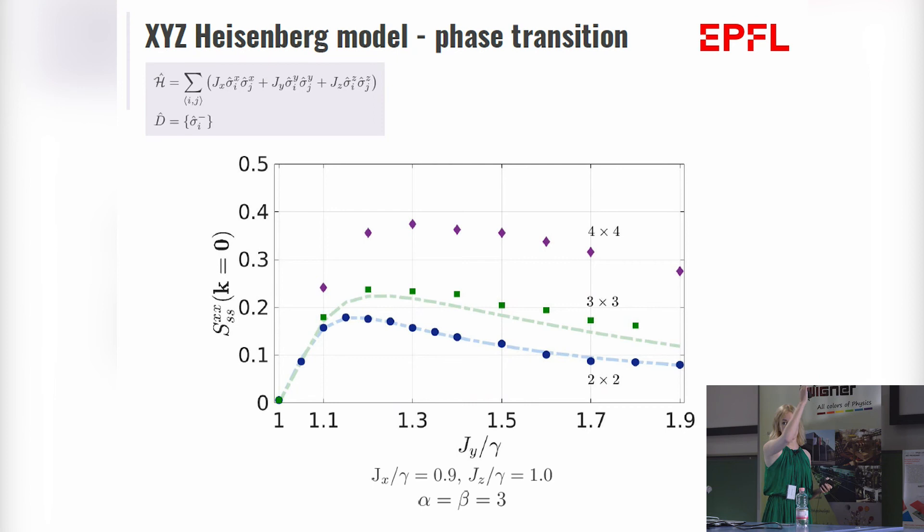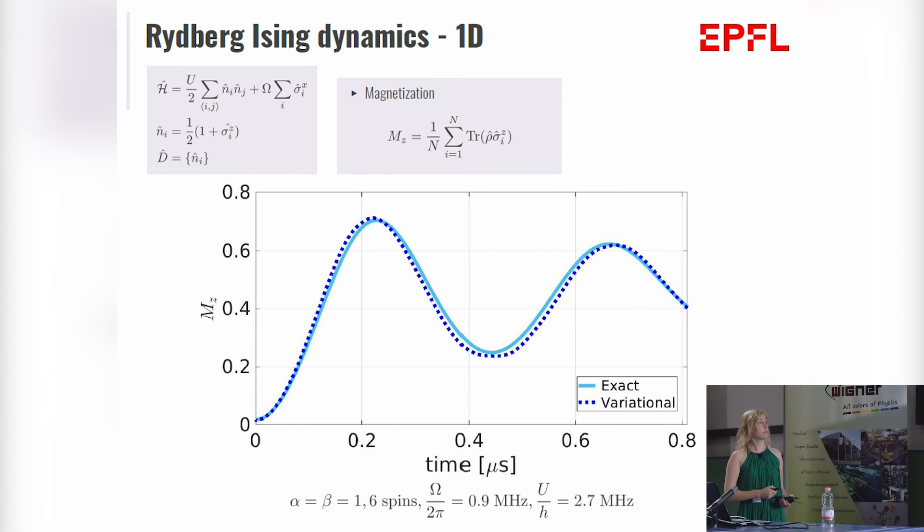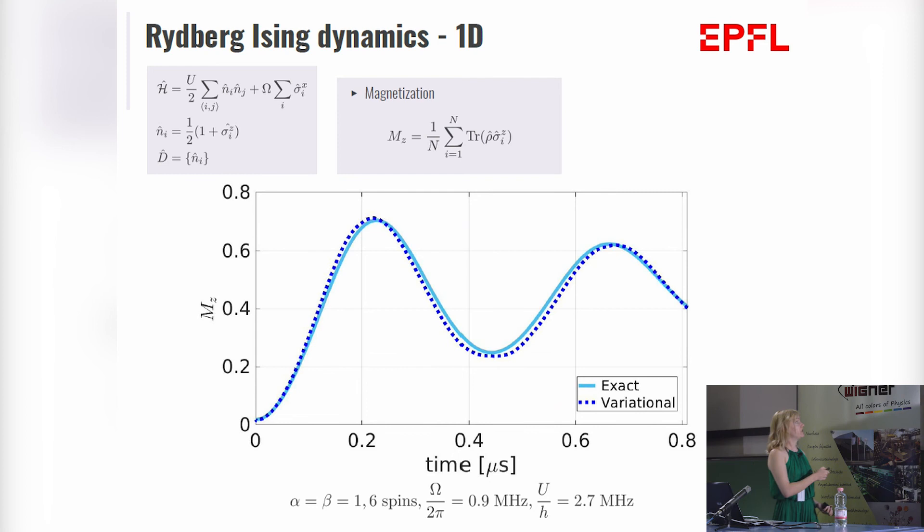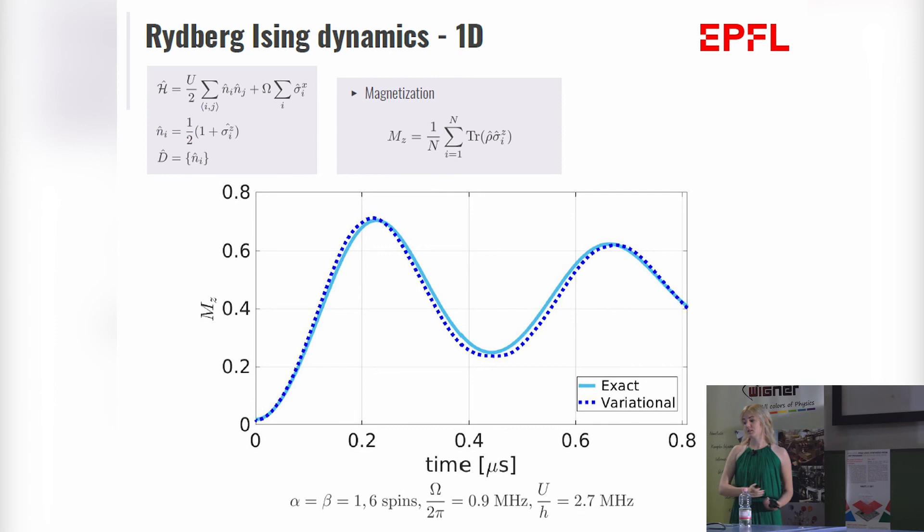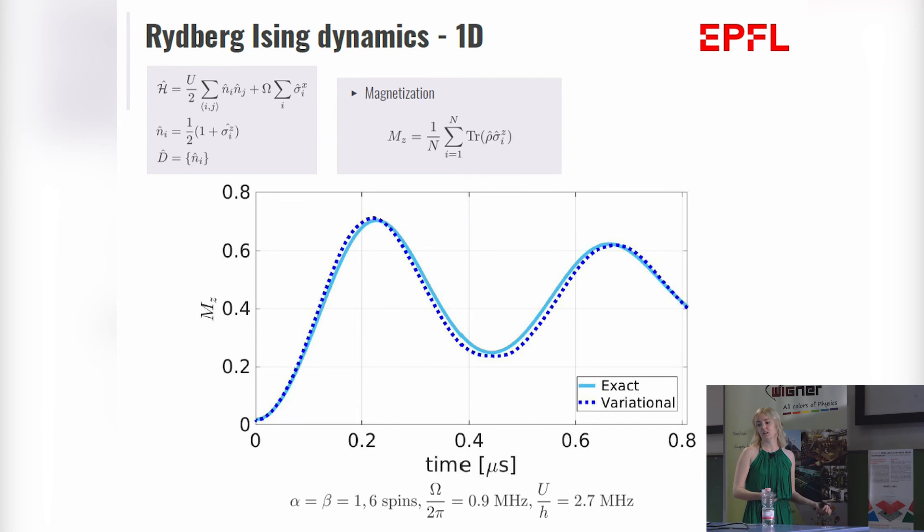Then I also wanted to show you real-time evolution. This is a different spin model. We can experimentally realize it with Rydberg atoms. And I'm showing you the time evolution of the magnetization, which is again the takeaway message. We can simulate this with a very modest number of hidden nodes. We only use the same number of hidden nodes as our visible nodes, which is low. And again, if we wanted a bit more accuracy, we can just increase the number of hidden nodes.